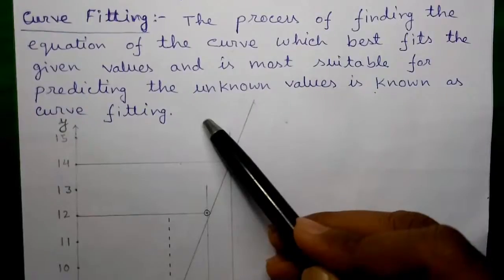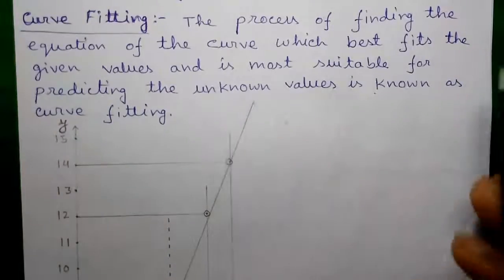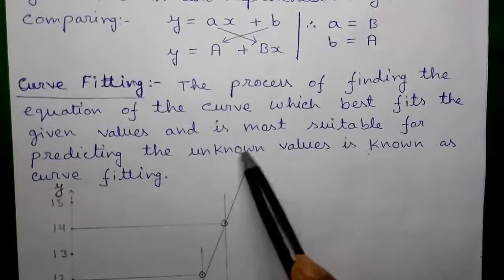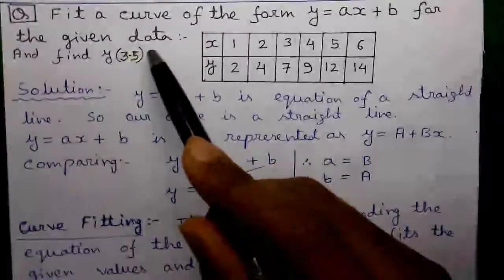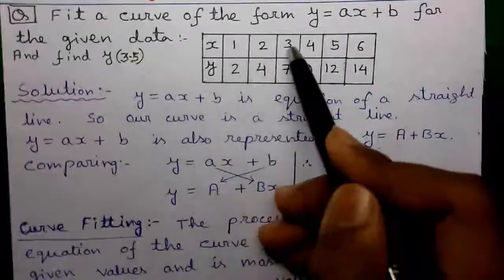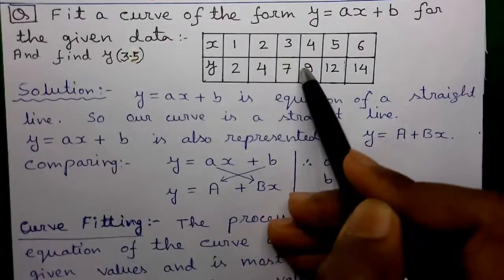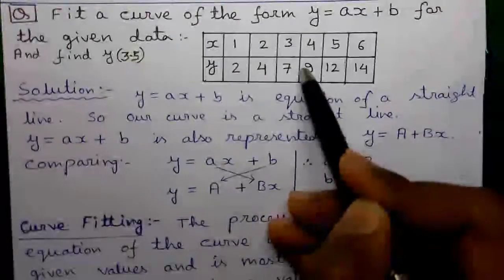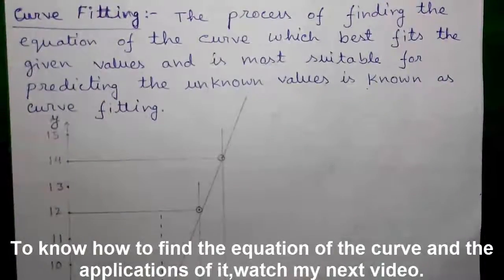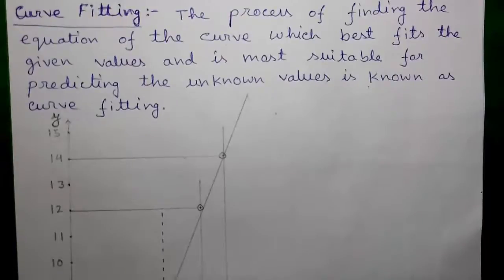What is the meaning of this? This means we first have to find the equation of the curve which best fits our given values, and which is most suitable for predicting unknown values. Here the unknown value is Y(3.5), which we have to find out. There is no value of X equal to 3.5 in the table, and the corresponding Y value is not given — that is unknown to us. So first we will find the equation of the curve, Y equals AX plus B, which best fits our given values and is most suitable for predicting Y(3.5).